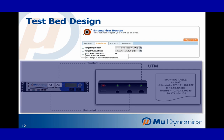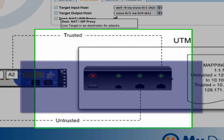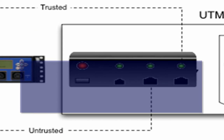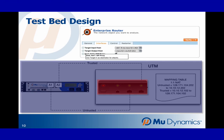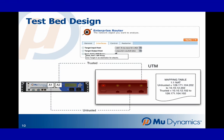During the analysis, connections are made through the target, vulnerability triggers are transmitted, and a blocking violation is flagged if the known vulnerability pattern is seen on the trusted side of the device.